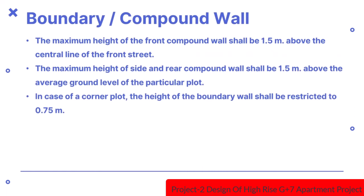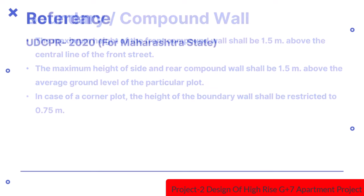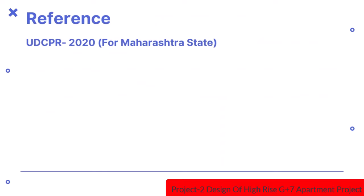Parapet walls and handrails provided on the edges of roof terraces, balconies and verandas shall not be less than 1m and not more than 1.2m in height from the finished floor level. The maximum height of the front compound wall shall be 1.5m above the central line of the front street. The maximum height of side and rear compound wall shall be 1.5m above the average ground level of the particular plot. In case of a corner plot, the height of the boundary wall shall be restricted to 0.75m. All values were taken from UDCPR for Maharashtra state.